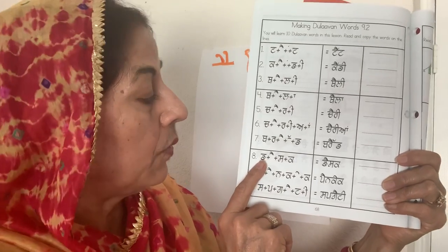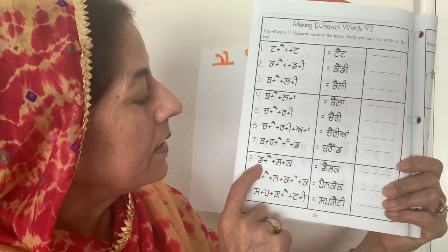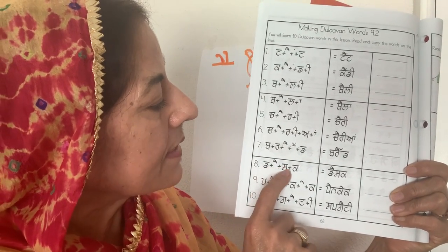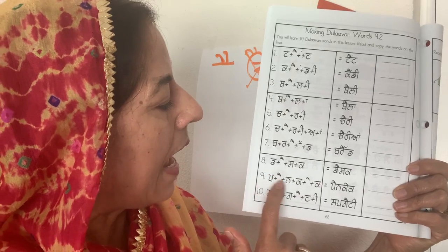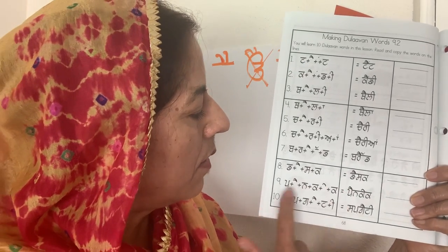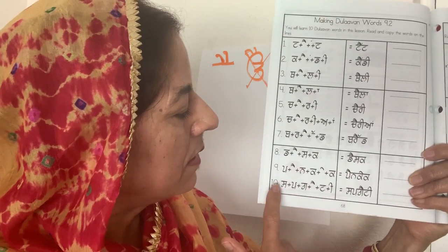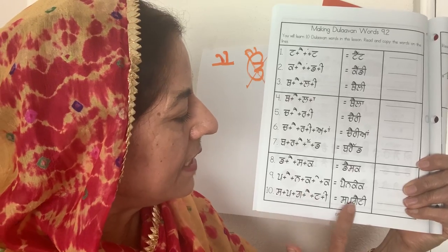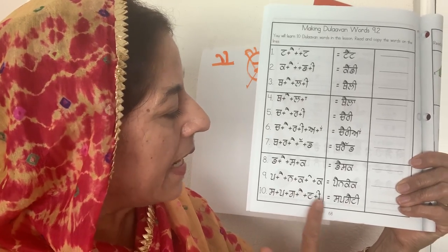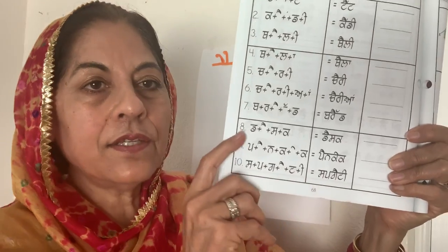Next words: Desk — D, A, S, K — Desk. Pancake — P, A, N, K, A, K — Pancake. Spaghetti — S, P, G, A, T — Spaghetti. You know almost all these words in English.